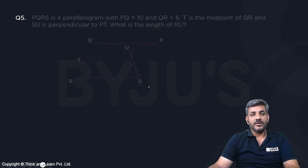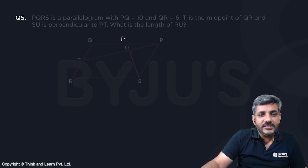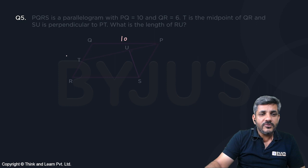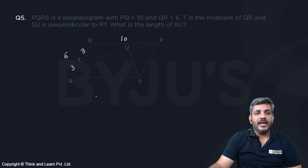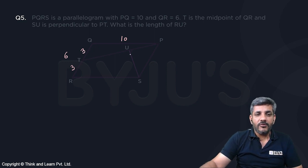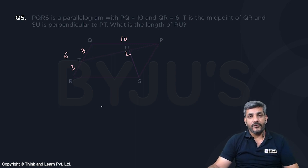Let us start from here. PQ is 10, so this length is given as 10. QR is equal to 6, so this length is given as 6. T is the midpoint of QR, which means this length is 3 and this length is also 3.